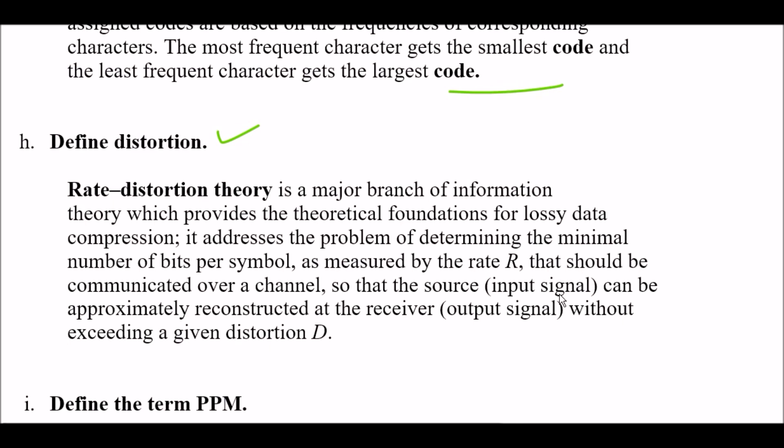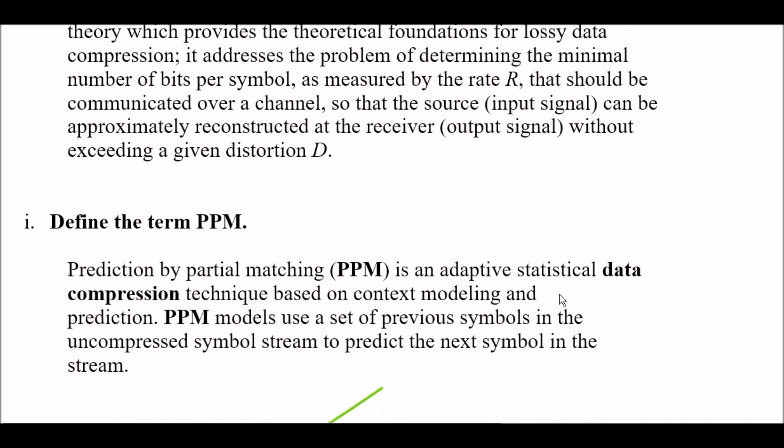Question H: Define distortion. Again very important. Rate distortion theory is a major branch of information theory which provides the theoretical foundation for lossy data compression. It addresses the problem of determining the minimal number of bits per symbol, as measured by the rate R, that should be communicated over a channel so that the source - that is input signal - can be approximately reconstructed at the receiver output signal without exceeding a given distortion D.